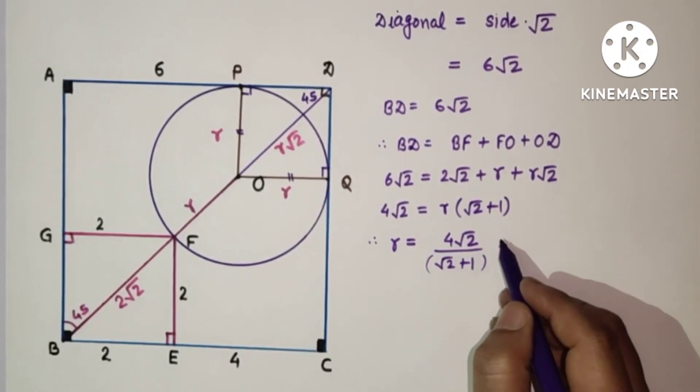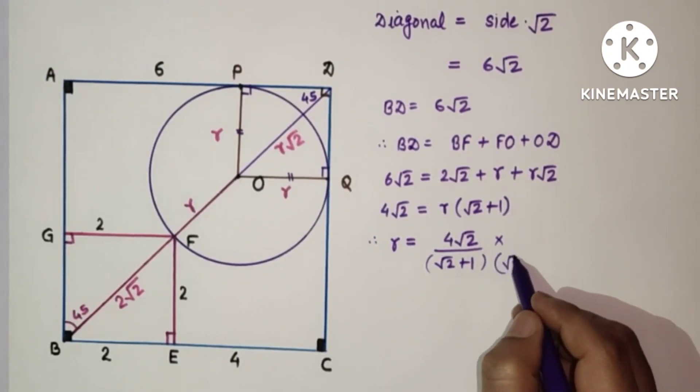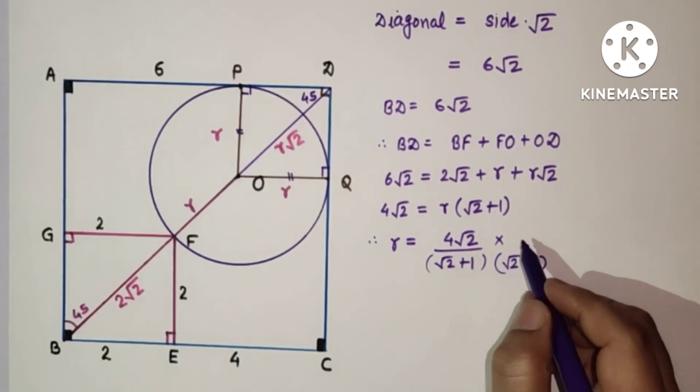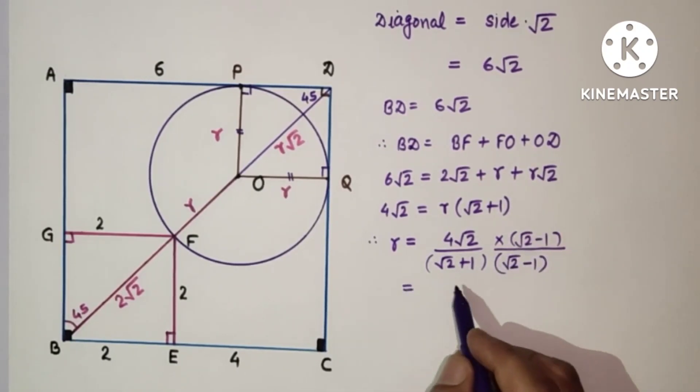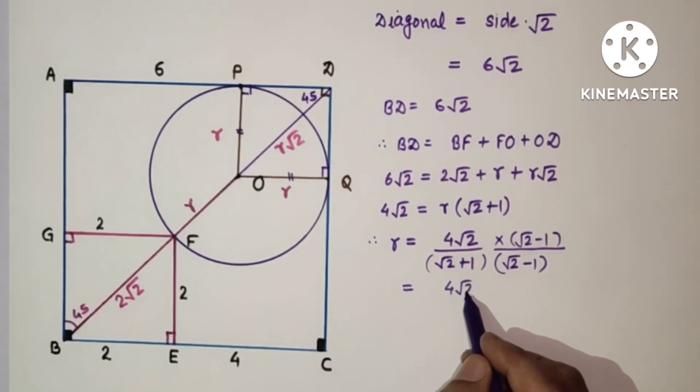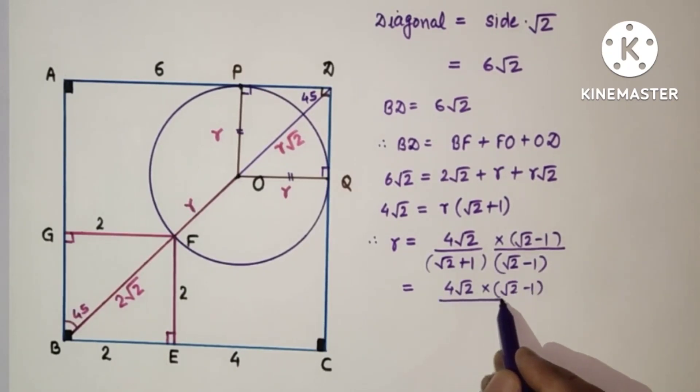Now multiplying its conjugate in up and down, it's root 2 minus 1, root 2 minus 1. So we are getting 4 root 2 into root 2 minus 1 upon 2 minus 1. Root 2 square is 2 minus 1. So that is equal to, this root 2 is multiplied here, only root 2 multiplied inside the bracket. So 4, root 2 into root 2 is 2, minus root 2 into 1 is root 2.